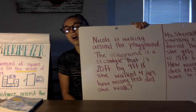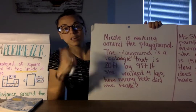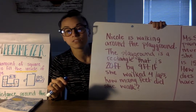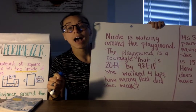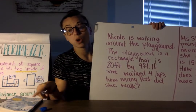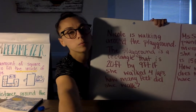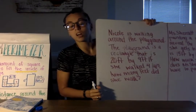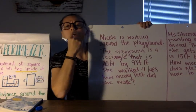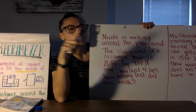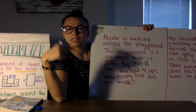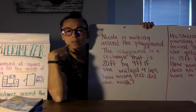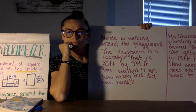Let's start with this one. It says: Nicole is walking around the playground. The playground is a rectangle that is 20 feet by 9 feet. She walked four laps. How many feet did she walk? This problem doesn't tell us to find area or find perimeter — we need to figure out if she's dealing with the distance around something or the inside of something. Take a look and think to yourself: am I doing area or perimeter?